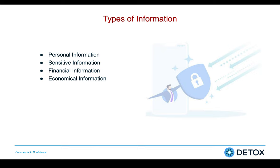Personal information refers to entities like your name, address, and even your DNA sequence. Sensitive information includes your credentials, debit or credit card information, or any official documents. Financial information deals with money — which is in your wallet, ATM, bank, or at your home. Economical information means the assets you hold which define your economy — like properties, loans, or insurance — which can be categorized under economical information.